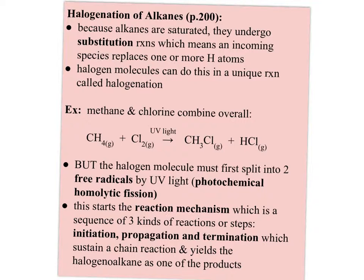The halogen molecule will only split in the presence of UV light because alkanes are extremely stable — very low reactivity. UV light is required to split the halogen apart, and when you split chlorine apart into two chlorine atoms, they each have seven electrons. Neither one is stable, and neither one has a charge. They're simply very reactive single atoms, and these are called free radicals.